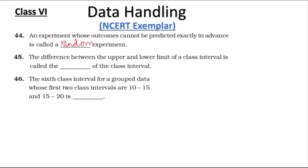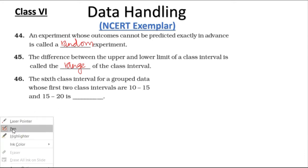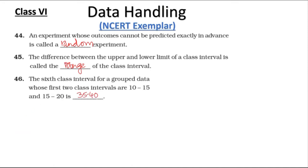Question 44: An experiment whose outcomes cannot be predicted exactly in advance is called a random experiment. Question 45: The difference between the upper and the lower limit of the class interval — here there is a mistake — this is not called range, this is called the size or width of the class interval.